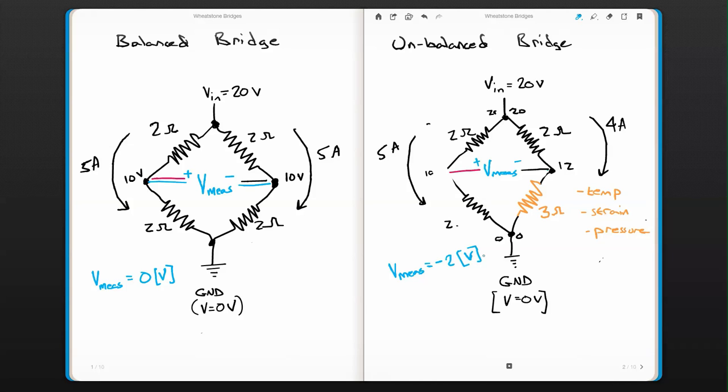is I can calibrate this somehow either using theory or just using do a bunch of practice runs. I can correlate this output voltage, my measured voltage to some temperature, some strain, some pressure, something like that. So that's the basics of a Wheatstone bridge.